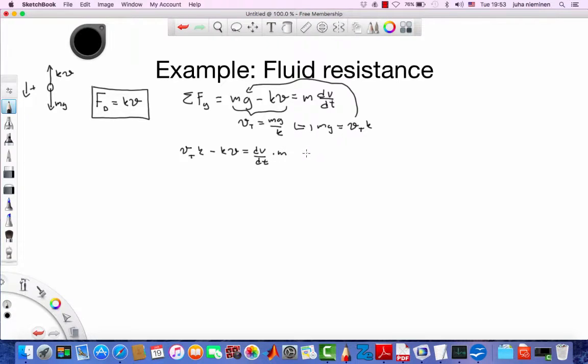So now we'll separate the variables or let's combine some stuff first here. So here we have k as a common factor. So we have k times vt minus v. The v is the velocity at any given time and m times dv over dt.